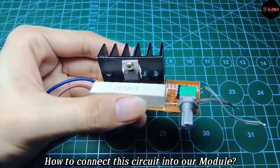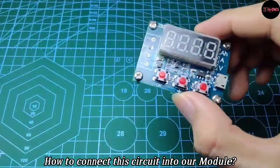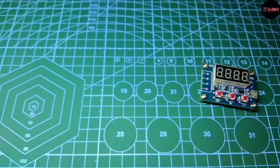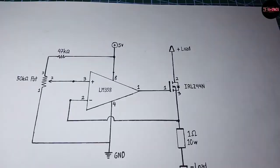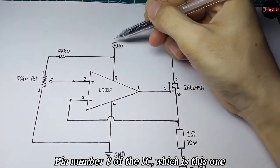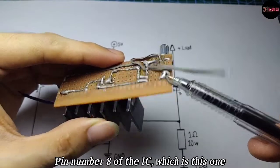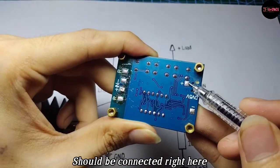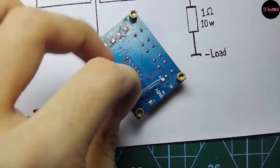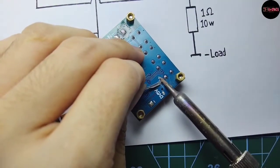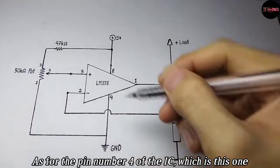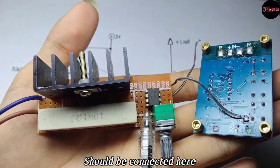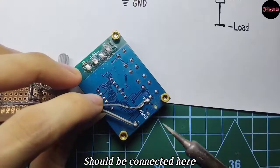Question is how to connect this circuit into our module, but it's pretty simple. First, pin number eight of the IC, which is this one, should be connected right here. As for pin number four, which is this one, should be connected here.